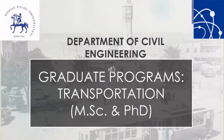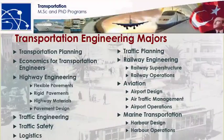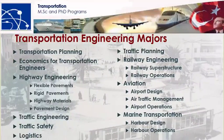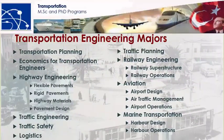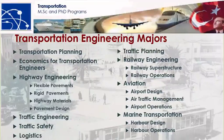The University Graduate School of Natural and Applied Sciences has a transportation program under the civil engineering department. The transportation graduate program provides the following majors: transportation planning, economics for transportation engineers, highway engineering, traffic engineering, traffic safety, logistics, traffic planning, railway engineering, aviation, and marine transportation.